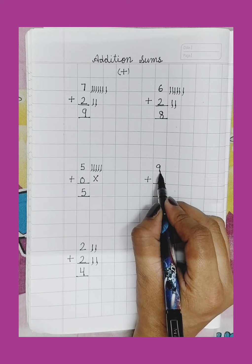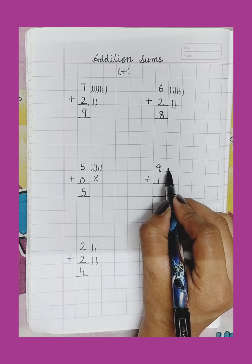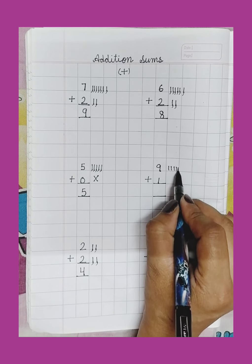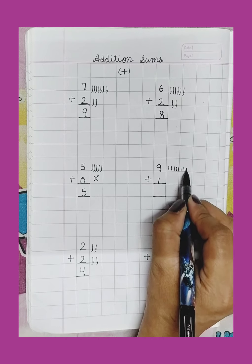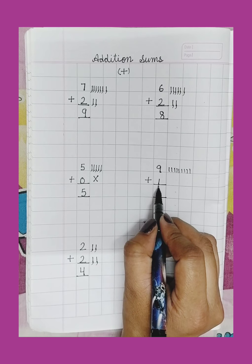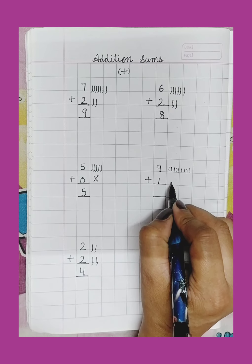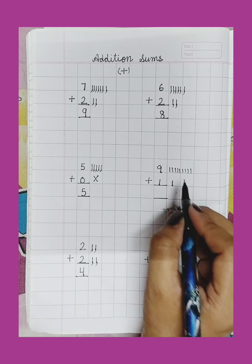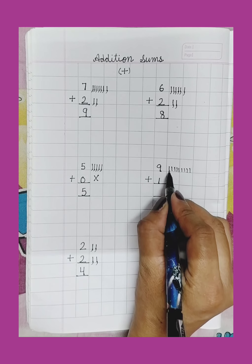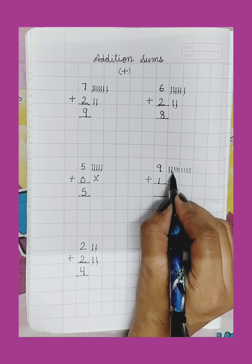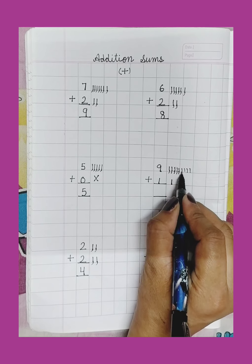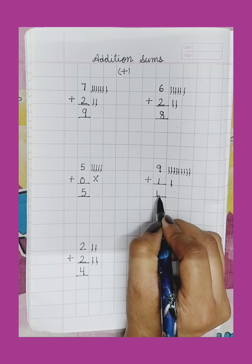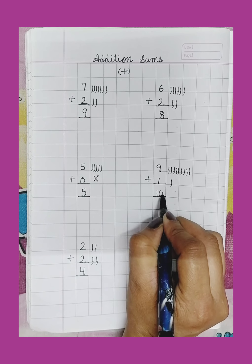Number 9. Draw 9 lines: 1, 2, 3, 4, 5, 6, 7, 8, 9. Number 1. Draw 1 line. Count the lines: 1, 2, 3, 4, 5, 6, 7, 8, 9, 10. Write here 10.